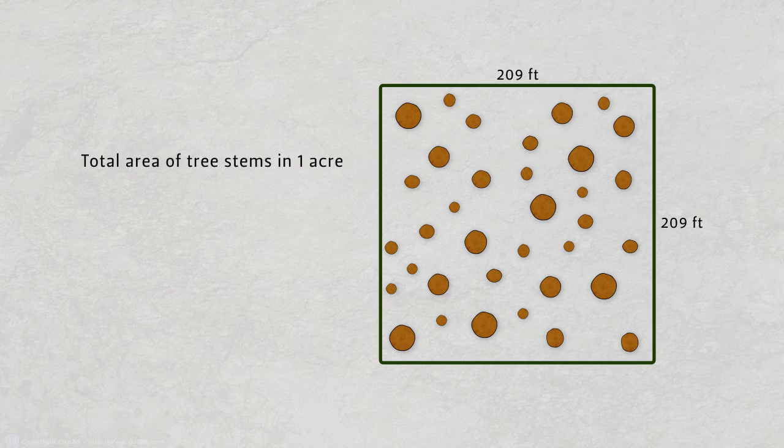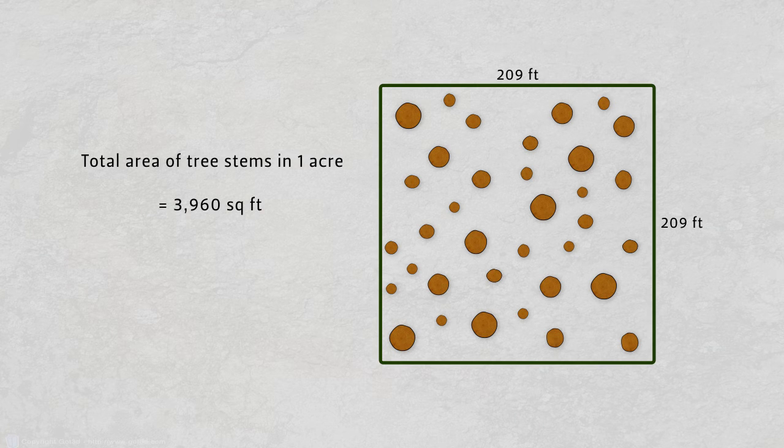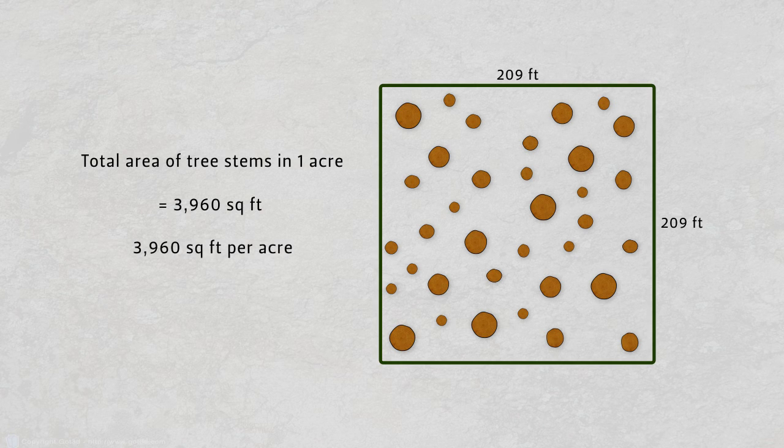For example, if the total area of each of our tree stems in our one acre of forest added up to 3,960 square feet, we would simply express that as 3,960 square feet per acre.